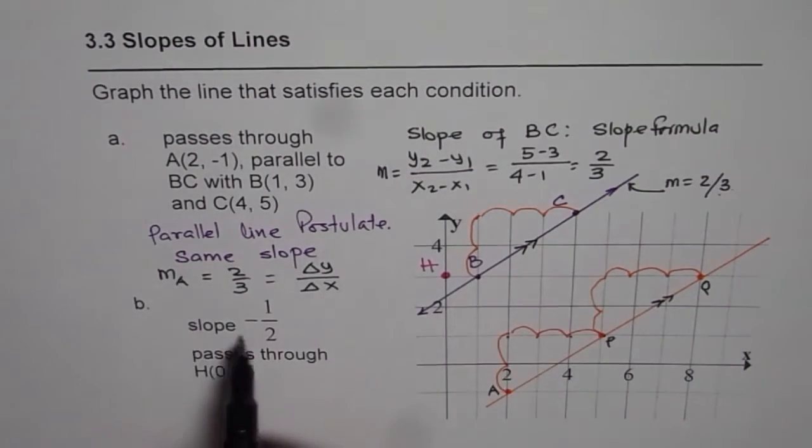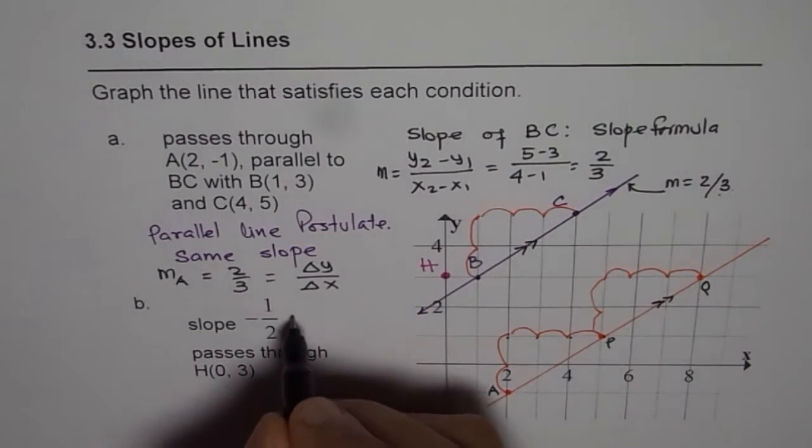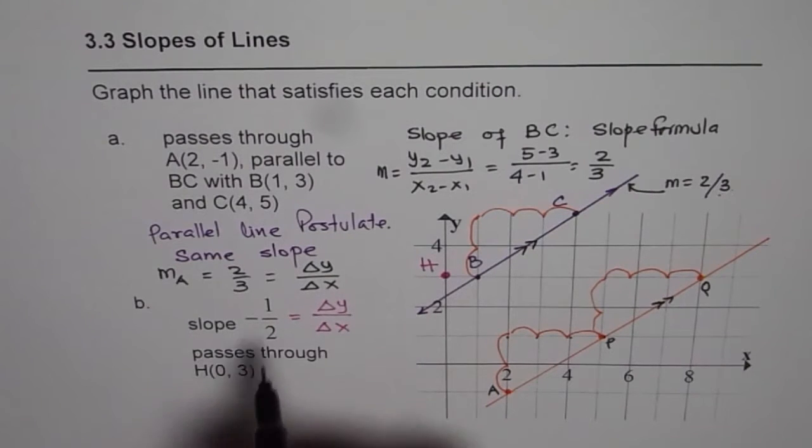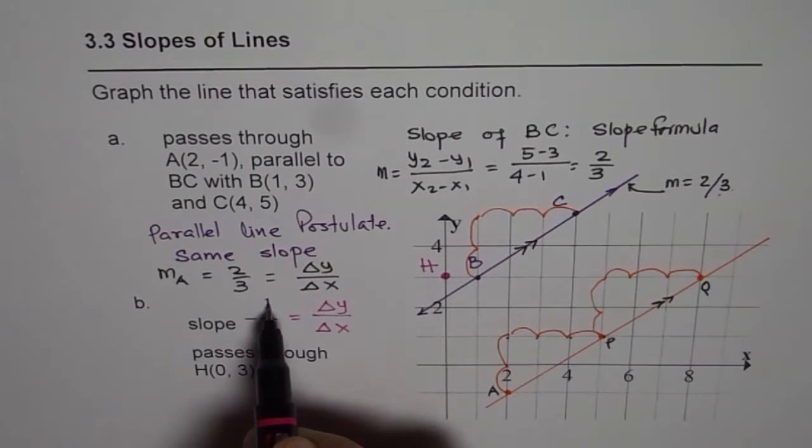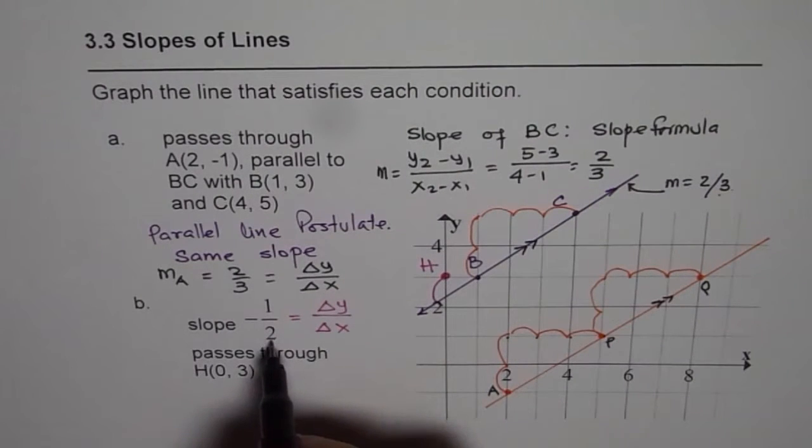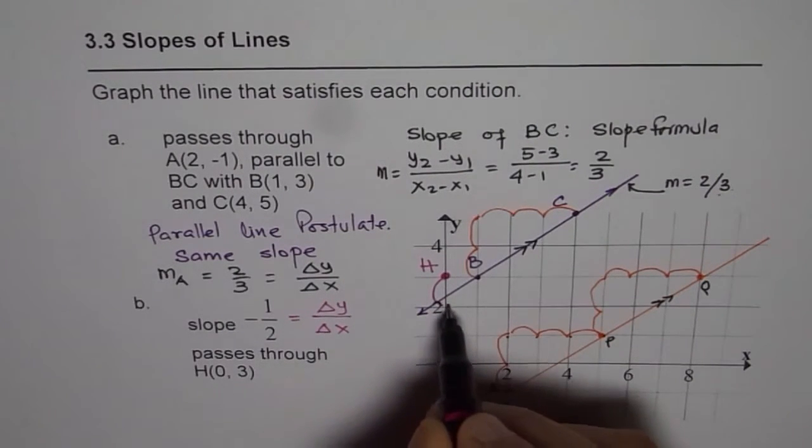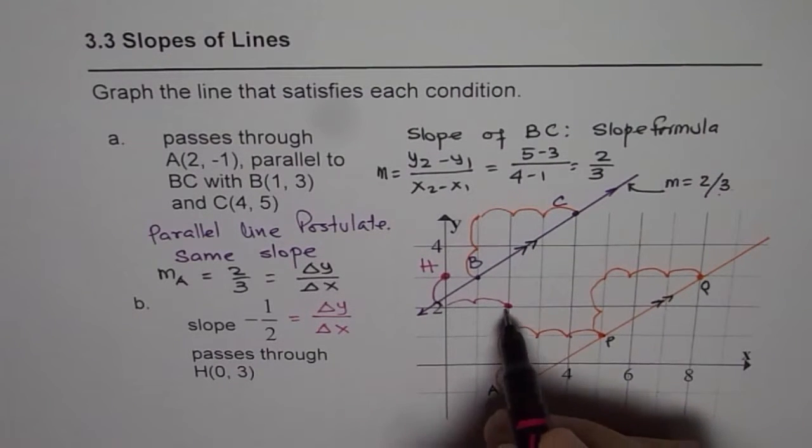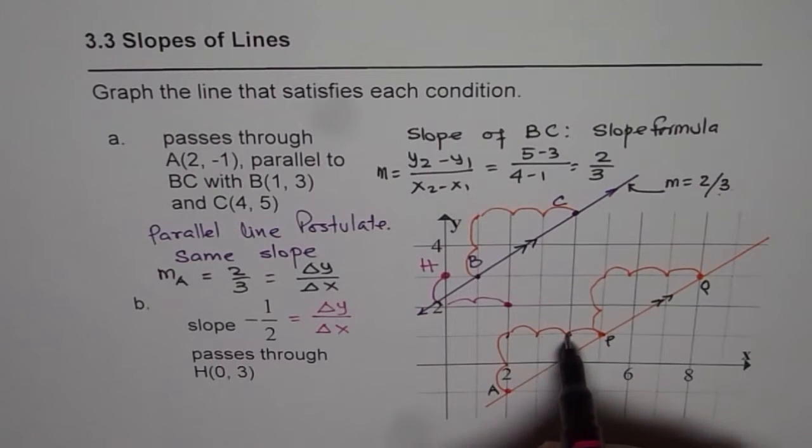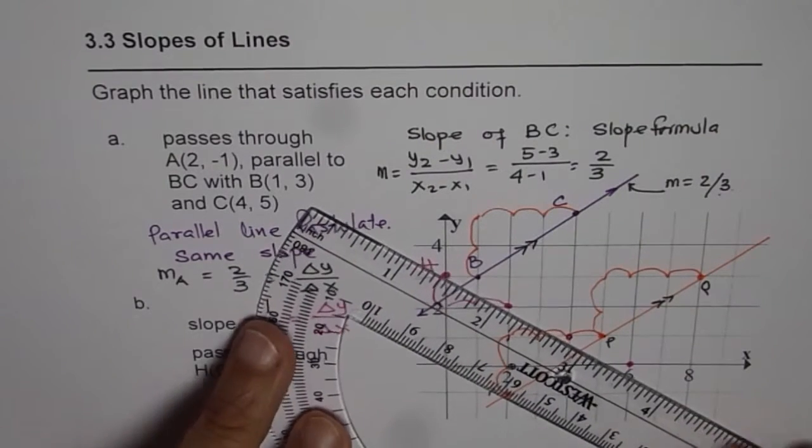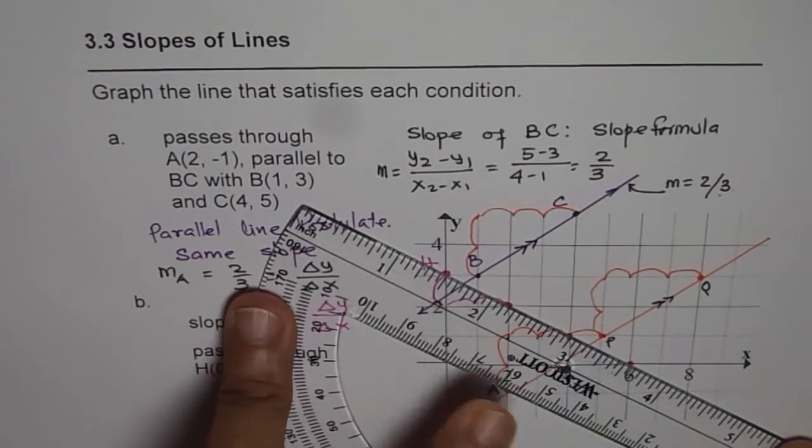The slope is -1/2, which means change in Y over change in X is -1/2. We come down 1 unit and move right 2 units to get another point. We can get many points this way. These points when joined together form a straight line whose slope is -1/2.